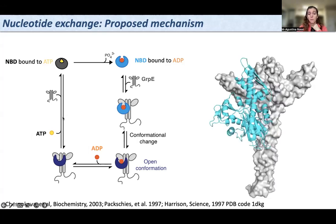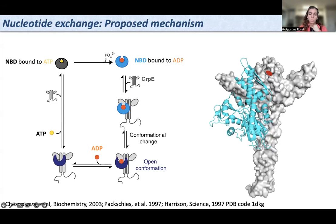There is a crystal structure that was solved in 1997 between GrpE and the NBD of E. coli. However, this structure was solved with a mutation in GrpE, and this mutation is also reported to avoid complex formation.